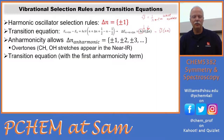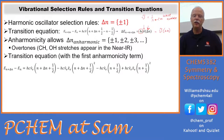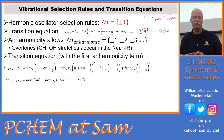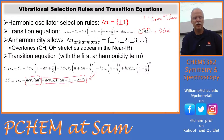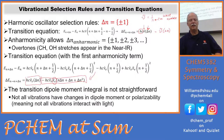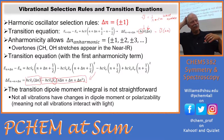Anharmonicity allows those overtones. Here's the transition equation with the first anharmonicity term. The setup has hc·ν̃ and the xe anharmonicity term — just the first quadratic term. After the algebra, the major term is still hcν̃·Δn, and then there's a small adjustment for the overtones with this anharmonicity constant.